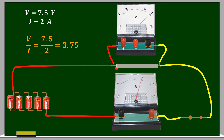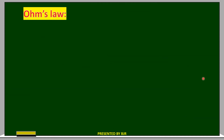That means when the current passing through the iron spoke gradually increases, the voltage or potential difference developing across its ends also increases proportionally. So V is directly proportional to I. More current flows, more voltage comes across its ends; less current flows, less voltage comes across its ends.